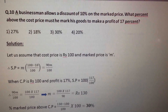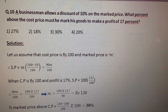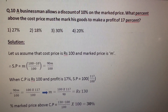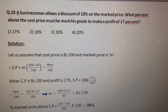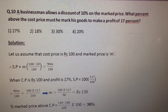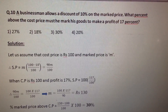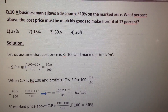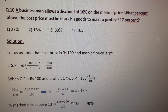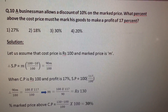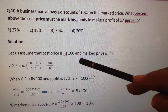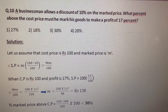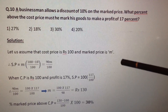A businessman allows a discount of 10% on the market price. What percent above the cost price must he mark his goods to make a profit of 17%? Let us assume that the cost price is 100 rupees and market price is M.